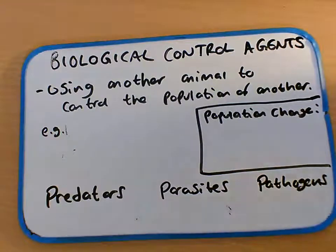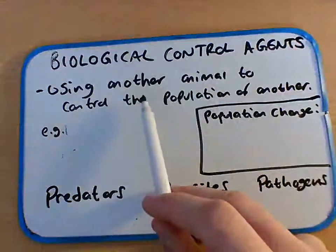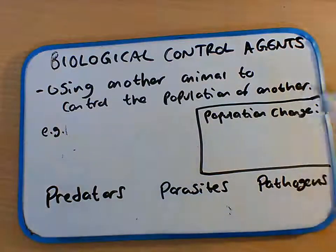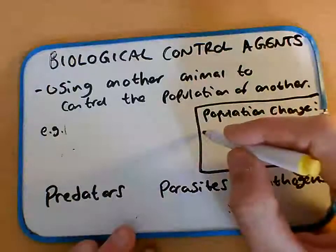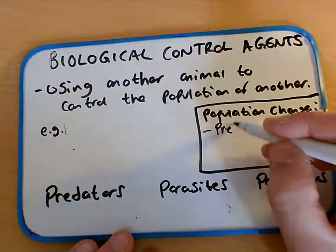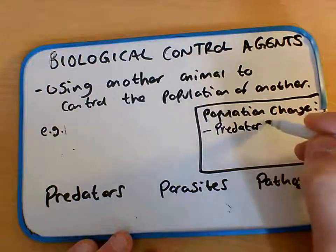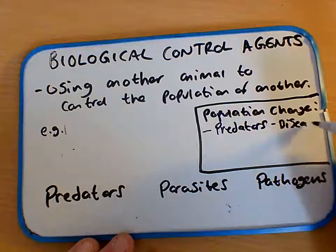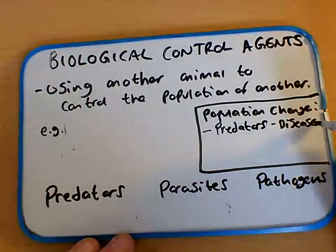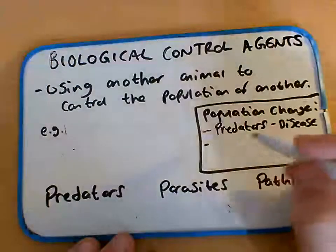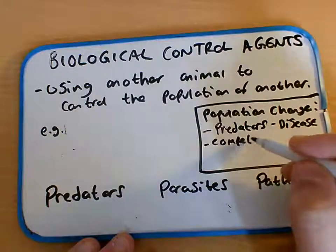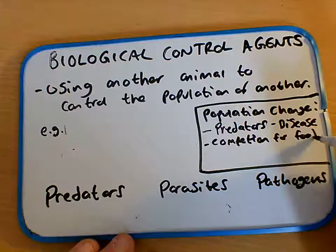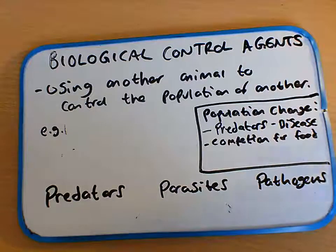These are called biological control agents — we're basically using another animal to control the population of another. Now populations naturally change throughout time anyway due to predators. The predator eats the prey so their numbers will change. There could be a disease in the population, or some form of competition, say for food — some will get out-competed and will die of starvation.